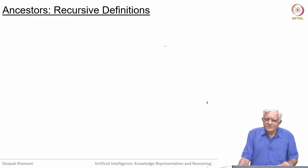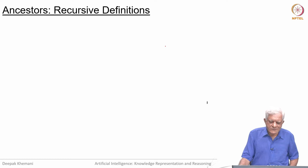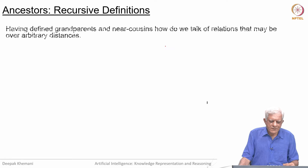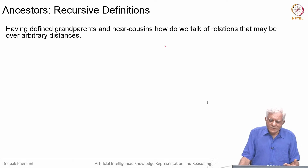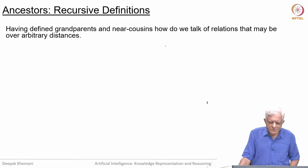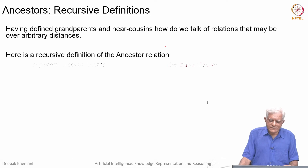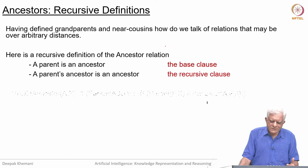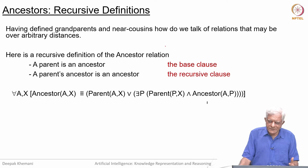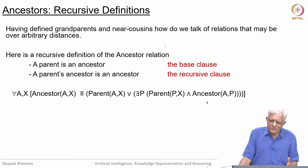Luckily, we can use recursion here to define such relations in logic. Having defined grandparents and near cousins, how do you talk about relations that may be over arbitrary distances? Here is a recursive definition of the ancestor relation. The base clause is: a parent is an ancestor. The recursive clause is: a parent's ancestor is also an ancestor.